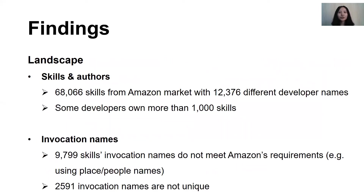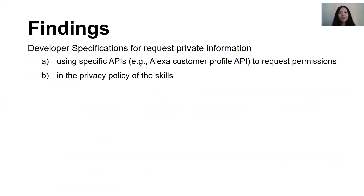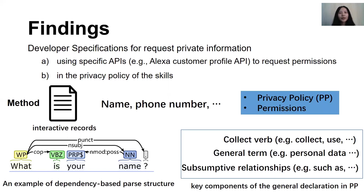Next, I will introduce the landscape of findings. We crawled about 68,000 skills from the Amazon market and found about 12,000 different developer names. Some developers have more than 1,000 skills. We also analyzed the invocation names and found that about 10,000 skills' invocation names do not meet Amazon's requirements. Among these, more than 2,000 invocation names are not unique. In addition, we examined interactive records regarding personal information. According to Amazon's rules, developers are allowed to obtain certain personal information for better user experience, which should be obtained using specific APIs to configure permissions and should be claimed in the privacy policy of the skill.